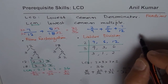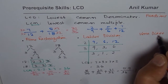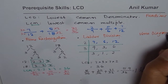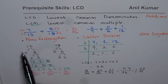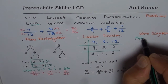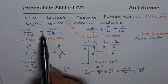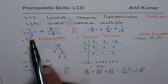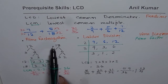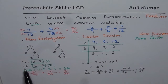One more technique that is very popular is the Venn diagram. We will go back to our first example: 7 over 12 plus 5 over 18. We need to find the lowest common multiple for 12 and 18. First step is prime factorization: for 12 we get 2, 2, and 3; for 18 we get 3, 3, and 2.